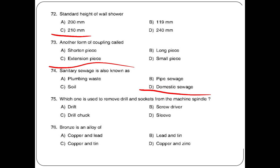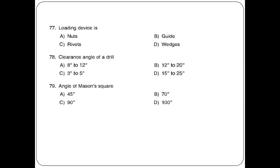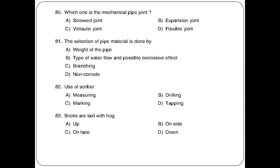Bronze is an alloy of copper and tin. Loading device uses wedges. Clearance angle of a drill is 8 to 12 degrees. Mason square angle is option C: 90 degrees.